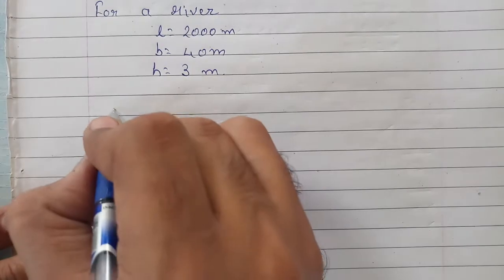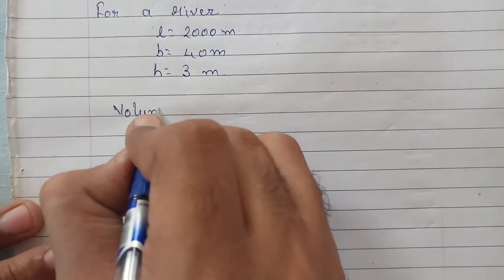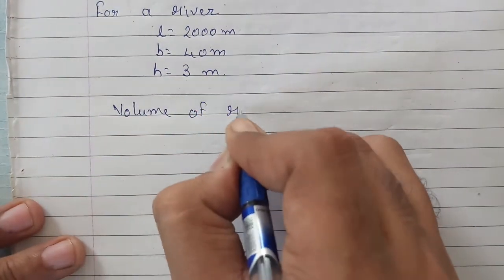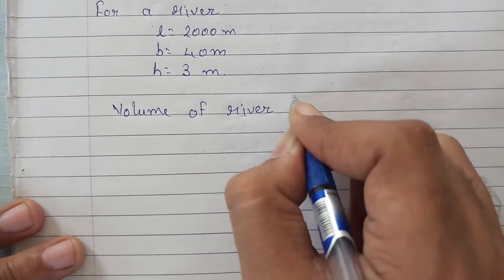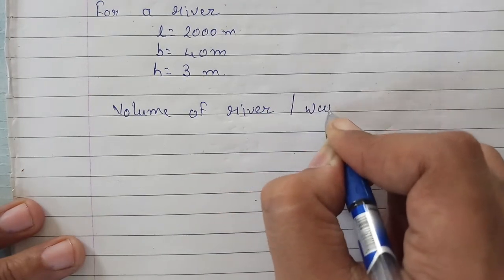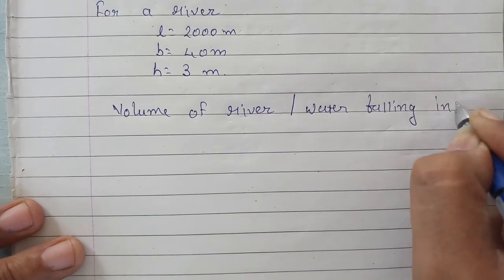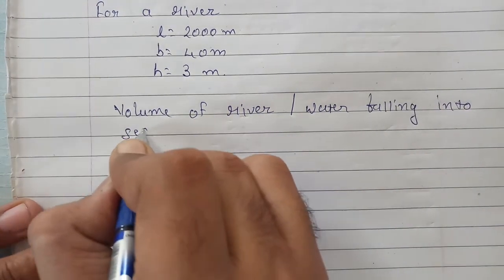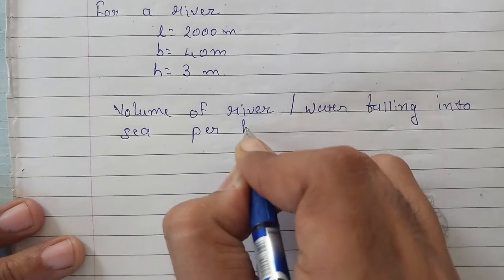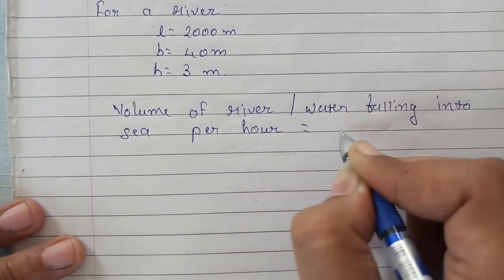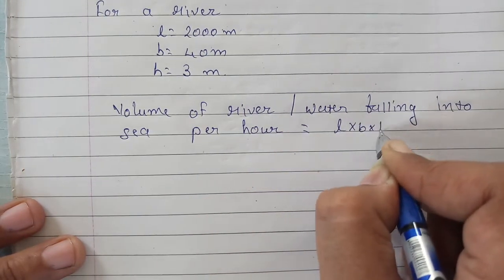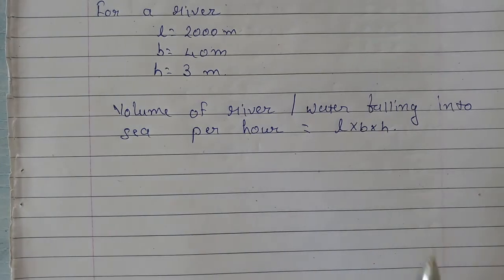So volume of river, volume of river, that is water falling into sea per hour, will be L into B into H. If we find its volume, then we will get how much water is falling into the ocean in one hour.